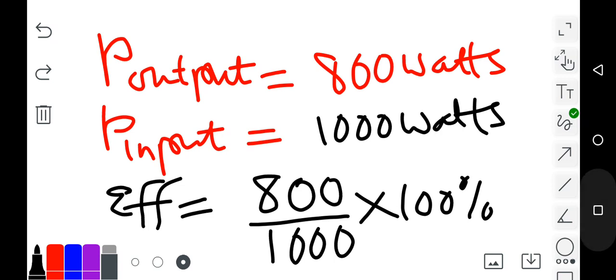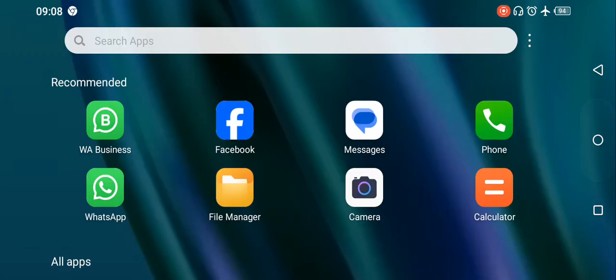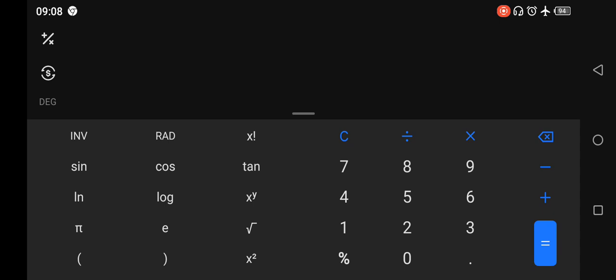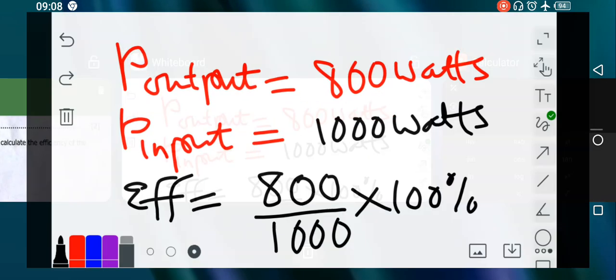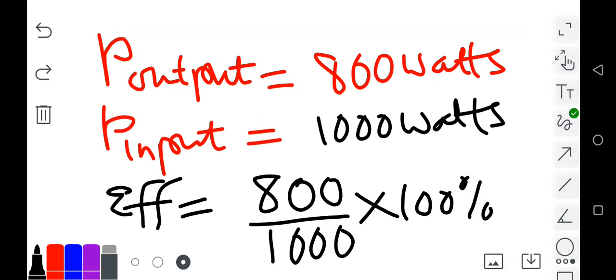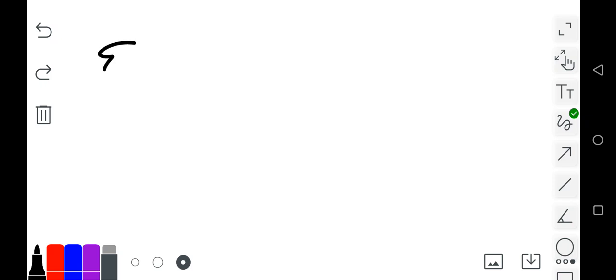Get your calculator. This is going to be 800 divided by 1000, which gives 0.8, and then that number multiplied by 100 gives us 80. Therefore, efficiency is equal to 80 percent.